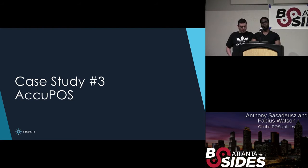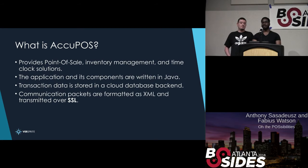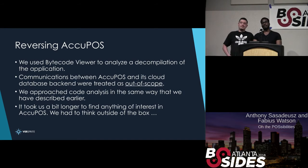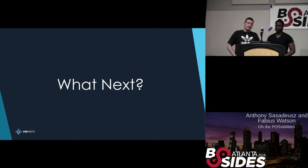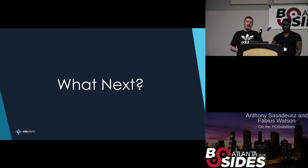The next application is AccuPoS, a point-of-sale and inventory management system that also includes time-clock features for employees. It's written in Java, so we took a similar approach as with Possum. Its database backend is in the cloud, which we excluded as out of scope. Reversing AccuPoS was similar to Possum — we used Bytecode Viewer and took the same approach. However, a lot of those techniques didn't yield results, and it took us longer to find anything interesting. We had to think outside the box and take a brand-new approach.